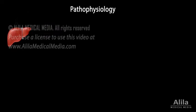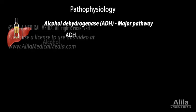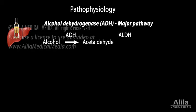The liver is the major site of alcohol metabolism. Two main pathways are involved: alcohol dehydrogenase and cytochrome P450-2E1, or CYP2E1. ADH converts alcohol to acetaldehyde. A second enzyme, acetaldehyde dehydrogenase (ALDH), then metabolizes acetaldehyde to acetate.